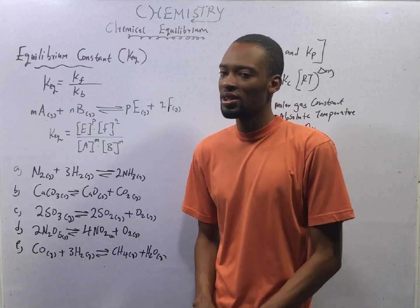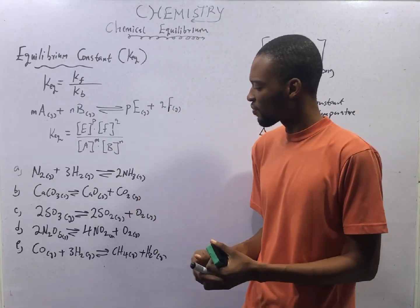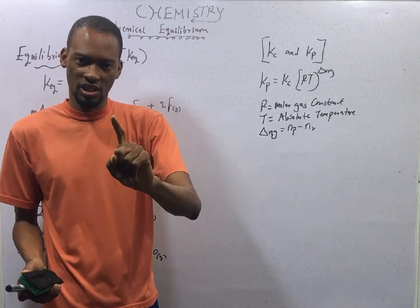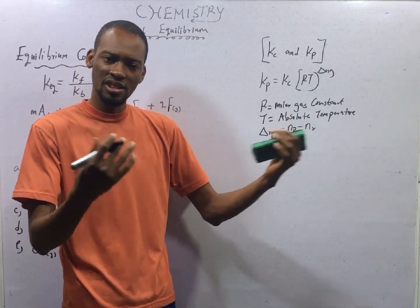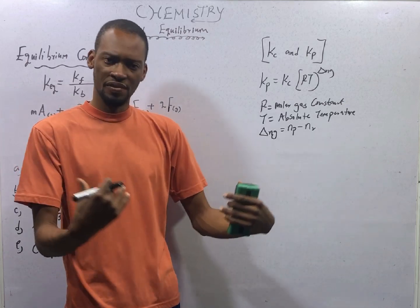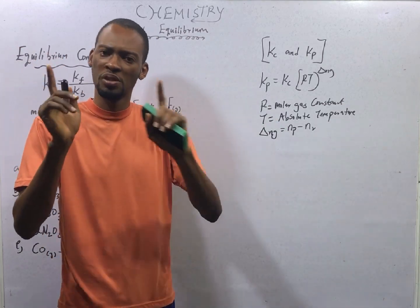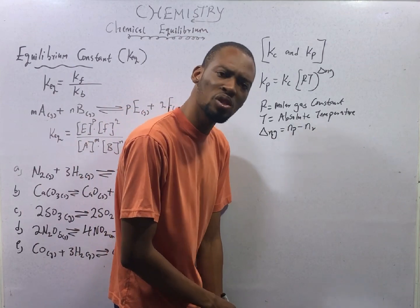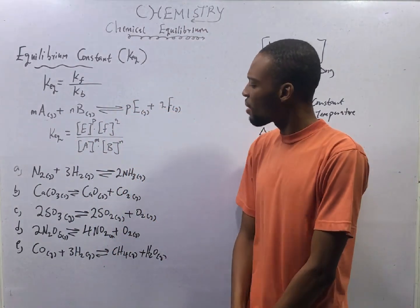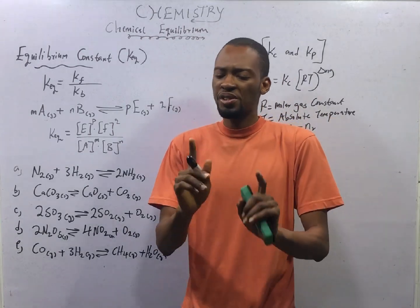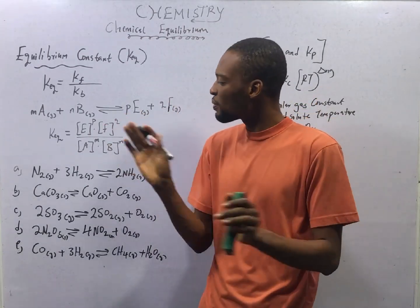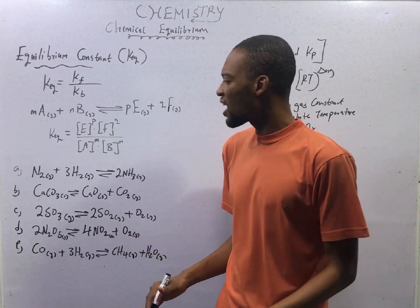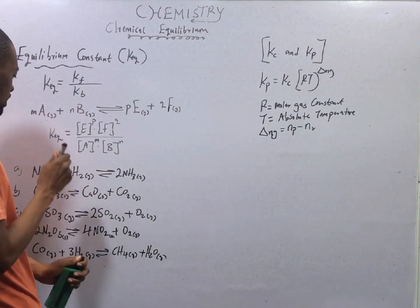We have about five questions to help you understand how to write equilibrium constants. Take note: catalysts do not affect equilibrium constants. It is true that catalysts can increase the rate of chemical reaction by reducing the activation energy; however, catalysts do not affect equilibrium constants. Also, when writing equilibrium constants, solids do not appear — the concentration of solids is taken to be one, so they don't appear in the equilibrium constant expression.